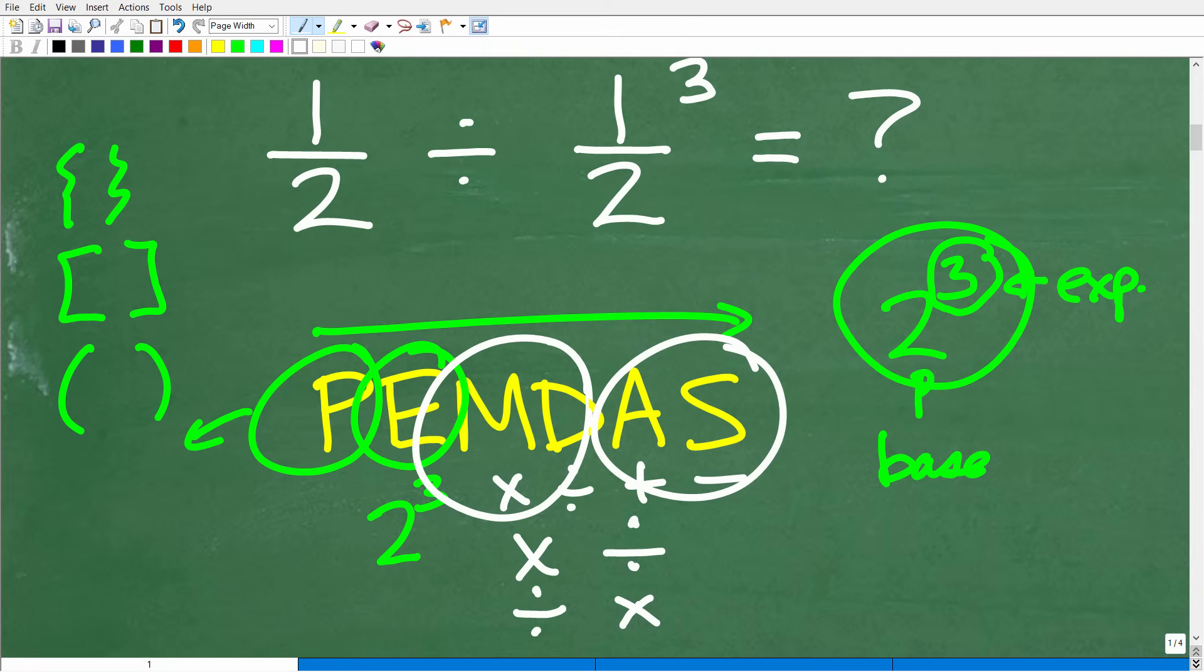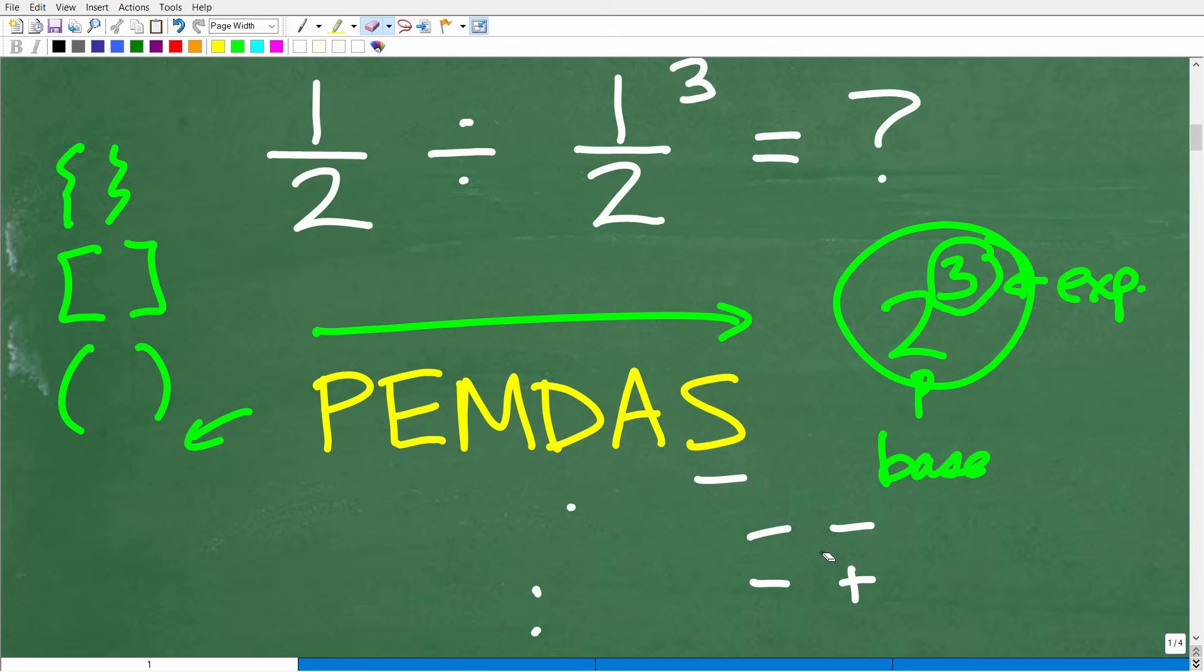So, again, whatever you see first from left to right, this is a very confused part of the order of operations, and addition and subtraction works the same way. All right, so this is the first thing we need to consider in this problem.